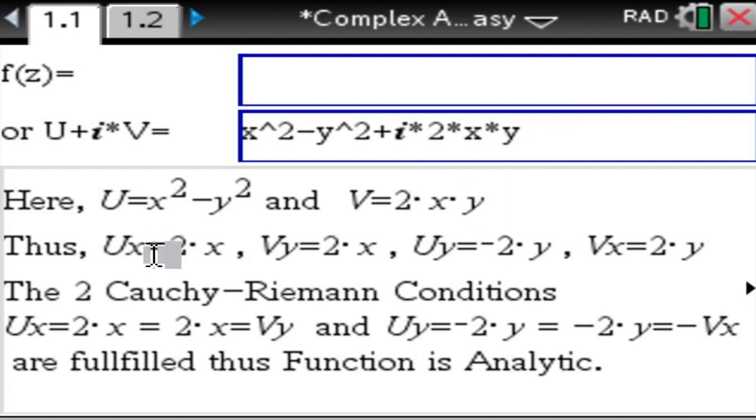So here our u is x squared minus y squared and the v is 2xy right here. So then we're going to take the partial derivatives. And we are now in a position to check if ux is vy and uy is negative vx. And in this case it is. So our given function here is analytic.